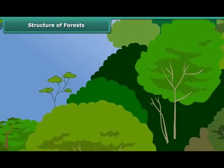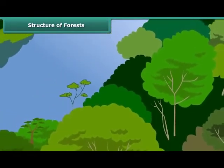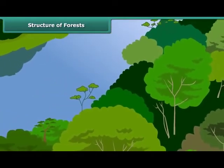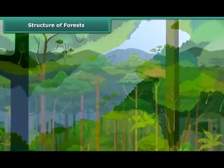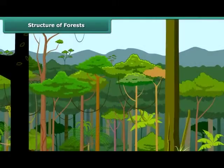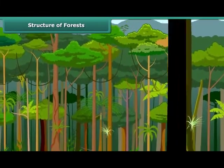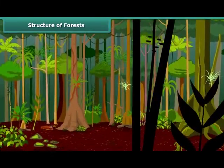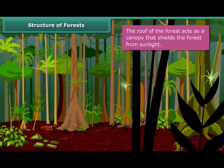The upper part of the trees and shrubs, comprising the branches and the leaves, is known as the crown. The crowns of the tall trees form the roof of a forest. This roof acts as a canopy that shields the forest from sunlight.